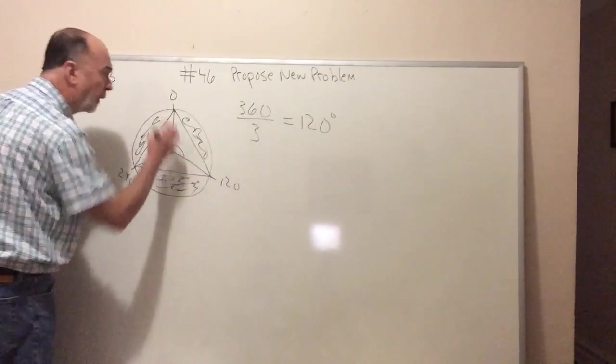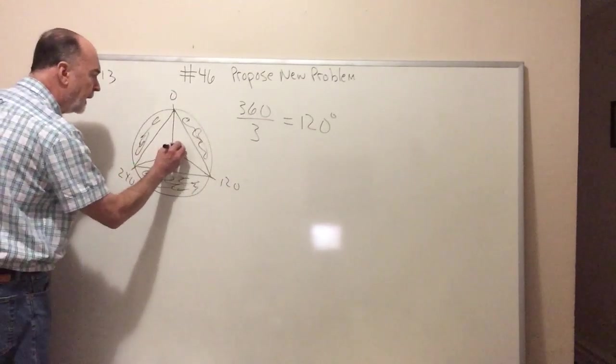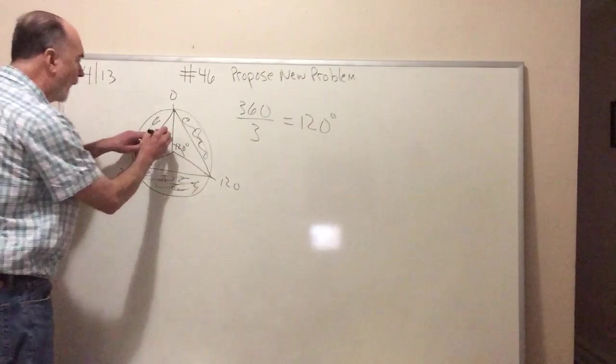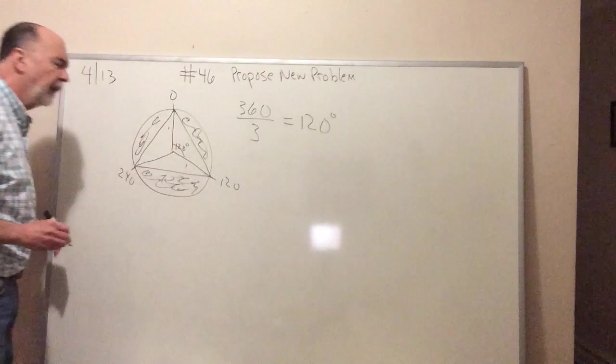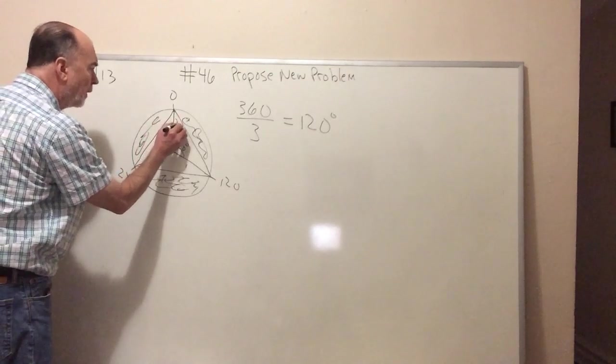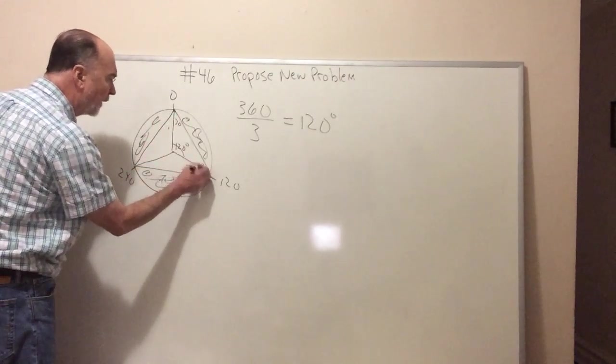Of course, since we rotated by 120, the central angle is 120, and since it's an isosceles triangle, what's going to happen here? This is going to be 30, and this is going to be 30.